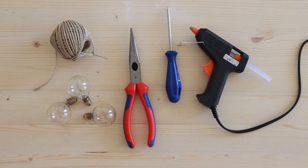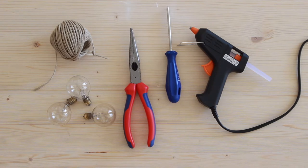So here's what you need for your tiny vases. The blown up light bulbs, pliers, a screwdriver, twine and a hot glue gun.